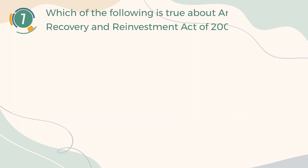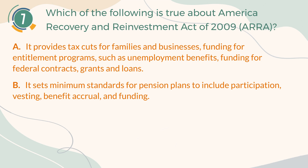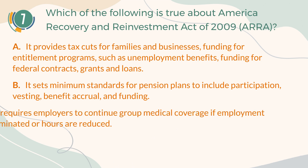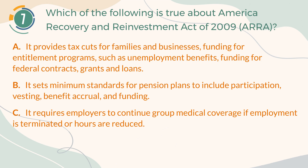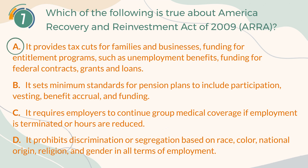Number 7. Which of the following is true about the American Recovery and Reinvestment Act of 2009, ARRA? A. It provides tax cuts for families and businesses, funding for entitlement programs such as unemployment benefits, funding for federal contracts, grants and loans. B. It sets minimum standards for pension plans to include participation, vesting, benefit accrual, and funding. C. It requires employers to continue group medical coverage if employment is terminated or hours are reduced. D. It prohibits discrimination or segregation based on race, color, national origin, religion, and gender in all terms of employment. The correct answer is A: it provides tax cuts for families and businesses, funding for entitlement programs such as unemployment benefits, funding for federal contracts, grants and loans.